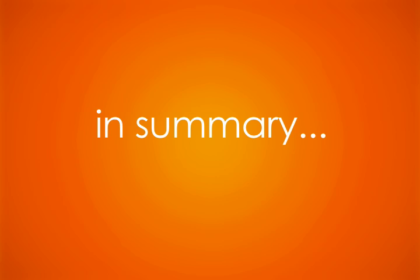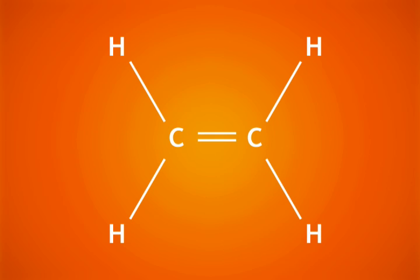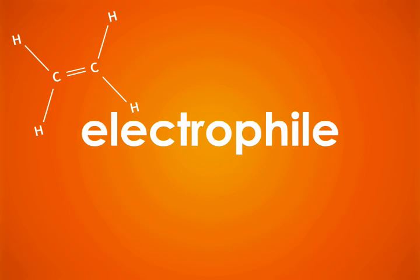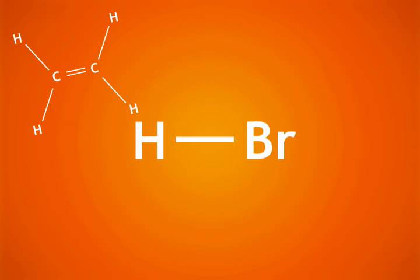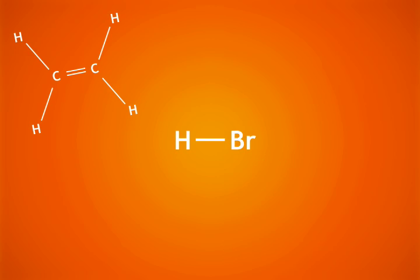Electrophilic addition involves two reactants. An alkene, whose double bond is rich in electrons and is thus nucleophilic. And an electrophile that will attack pi bond electrons in the alkene double bond. We'll use hydrogen bromide as an example.